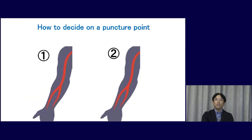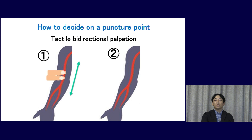How do we decide on a precise puncture point? I recommend tactile bi-directional palpation as shown in the picture. First, the long axis is determined by two fingers. Second, the short axis is decided by the index finger.